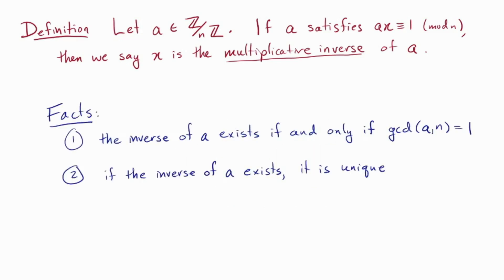Okay, so here are some basic facts about multiplicative inverses. The inverse of a exists if and only if a is co-prime to the modulus. And second, if the inverse exists, it's unique. Fact two is why it's okay for me to talk about the multiplicative inverse instead of a multiplicative inverse. You can find explanations for these facts in my other videos, so you can check the description below.